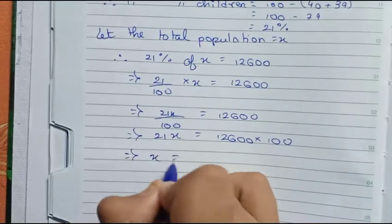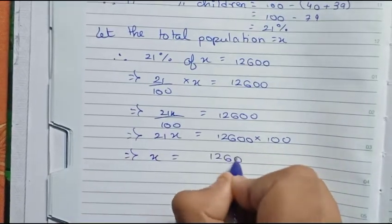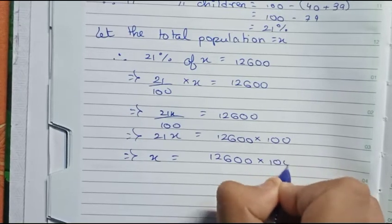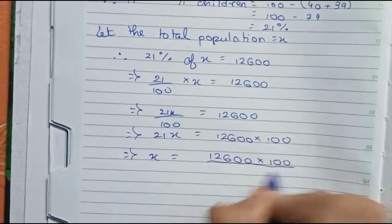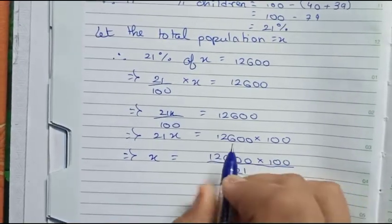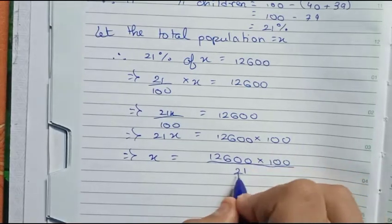Right, x equals to 12600 into 100 by 21. So now you can write 21 and 12600 directly.